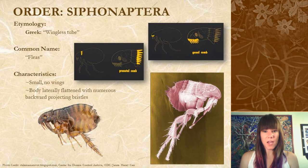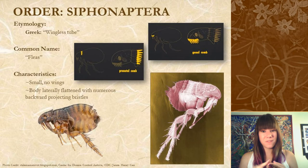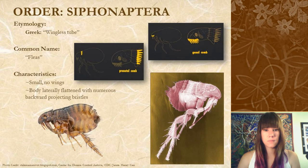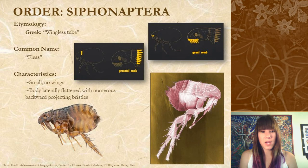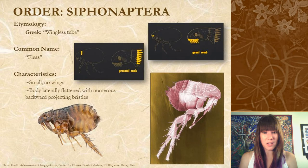The next order is Siphonaptera, or your fleas. In Greek, Siphonaptera means 'wingless tube.' Their characteristics are that they're really small, their body is laterally flattened, and there are a lot of bristles that point backwards to help them lie flat against their host and stick there so your dog can't scratch them out as easily. If you're moving into a new apartment, have the carpets cleaned or replaced because fleas can live in your carpet and not eat anything for up to six months.